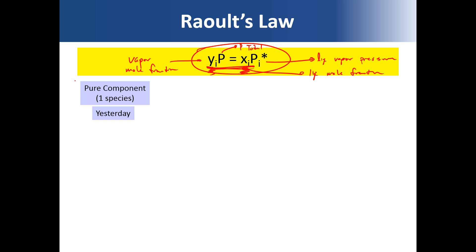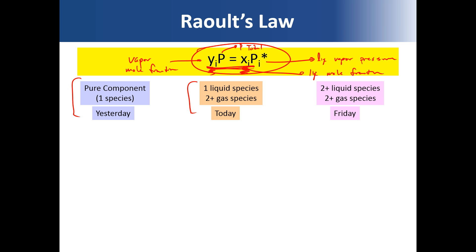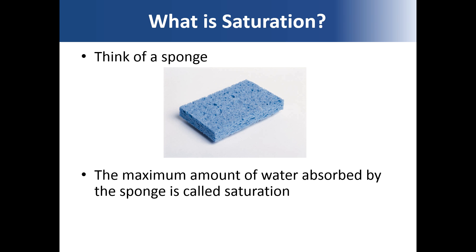For a pure single-component species, that's what we talked about last time. Today we're going to be talking about one liquid and two-plus gas species. On the next class period, we'll talk about two-plus liquid species and two-plus gas species — very multi-component for both phases. For today's class we'll use air and water.